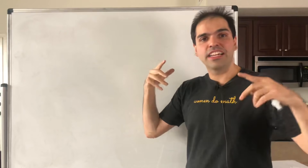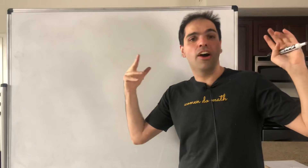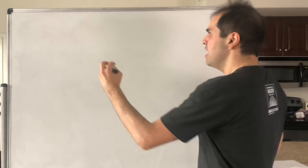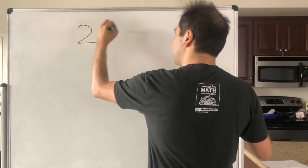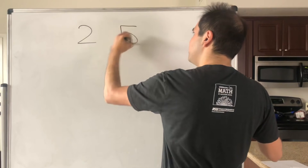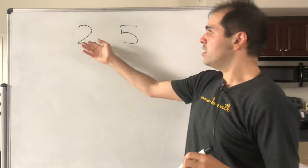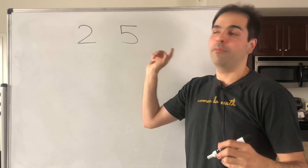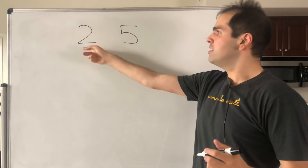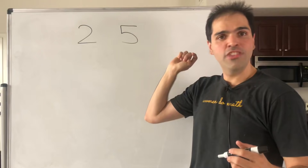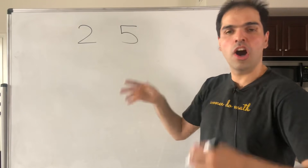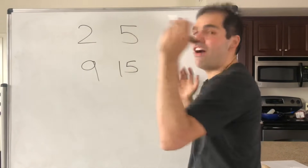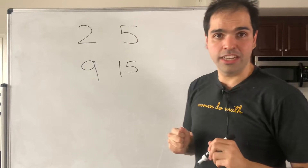So let's start with something that you probably thought of at some point in your lives. Namely, if we pick two numbers at random, let's say two and five, what are the chances that they have no factors in common? For instance, two and five have no factors in common, but let's say nine and fifteen — they have a factor of three in common.